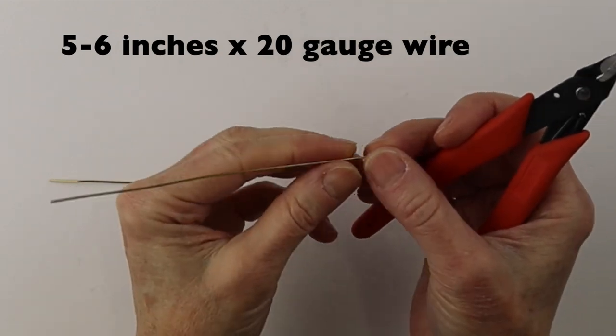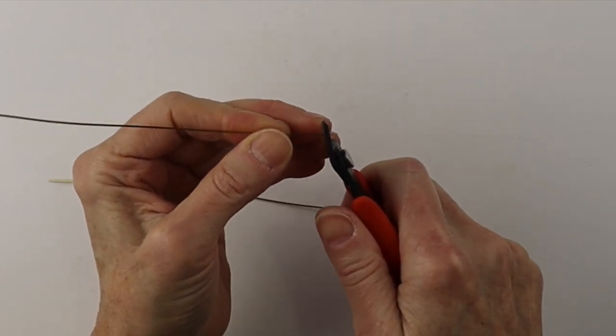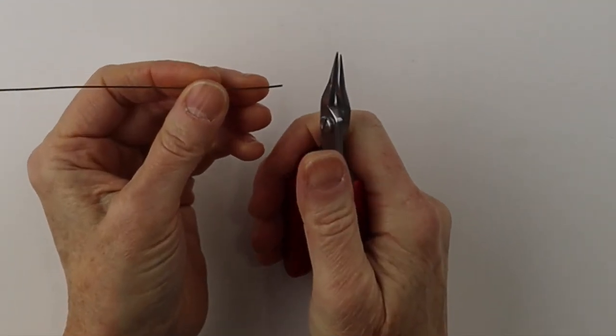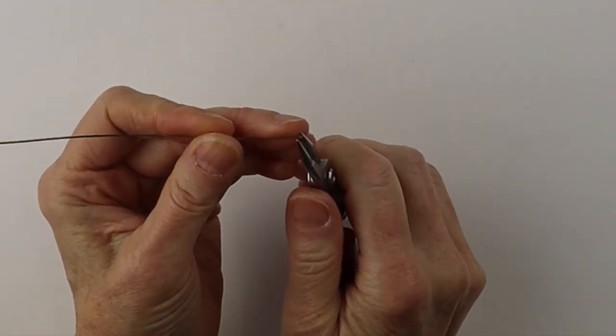So I have two pieces of wire that are about six inches long. I'm going to cut the ends flush with my flush cutters and take my small round pliers to make a loop.